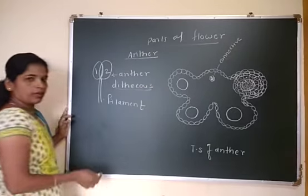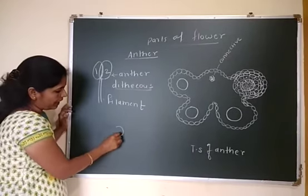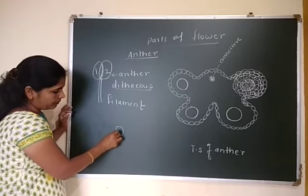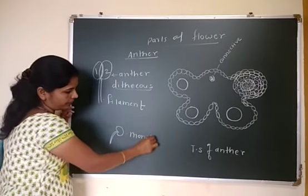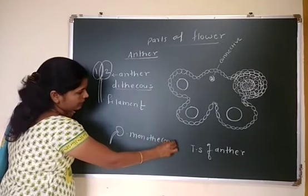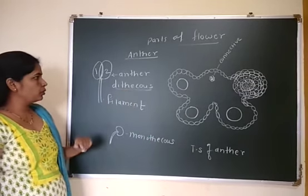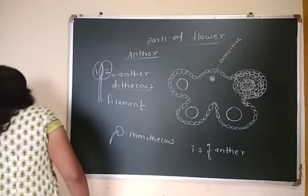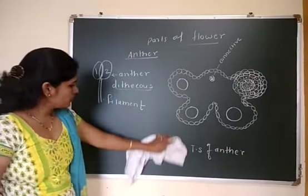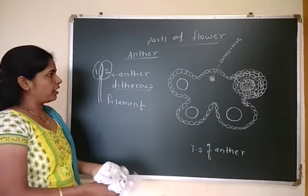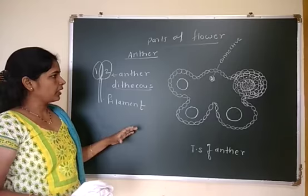In the case of hibiscus, there is only one kidney-shaped lobe, so it is called a monothecous anther. The other type is a dithecous anther, having two lobes. Many such stamens are present in one flower, and their function is to produce pollen grains.